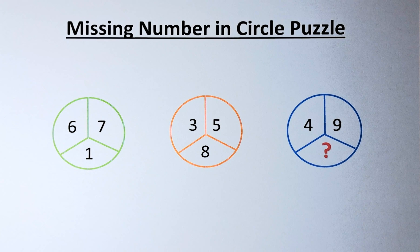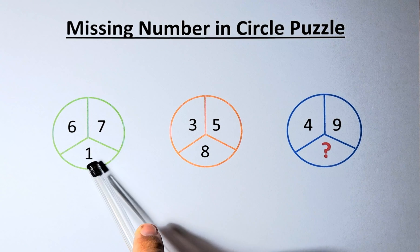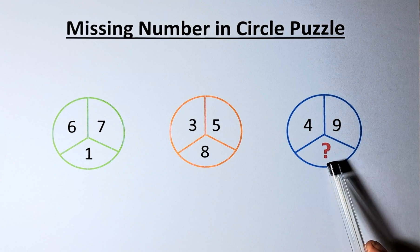As usual, we are going to find the number that is represented by the question mark. So, the trick is that we are going to look at 6 and 7 and then to get 1, 3 and 5 to get 8, 4 and 9 to get the question mark.